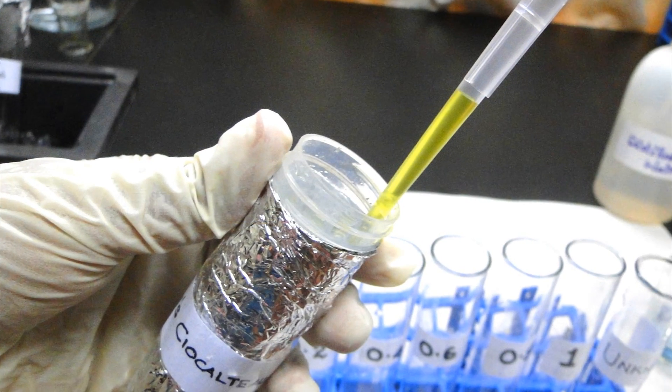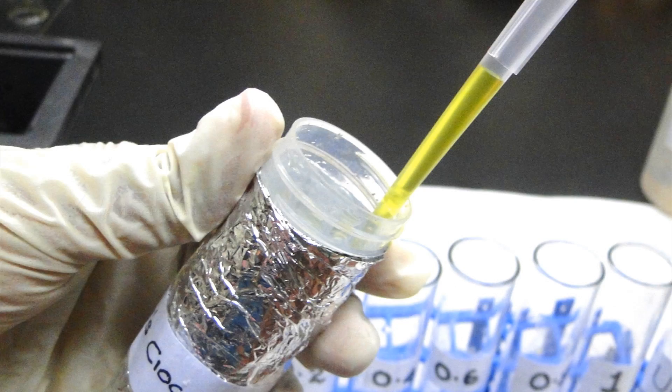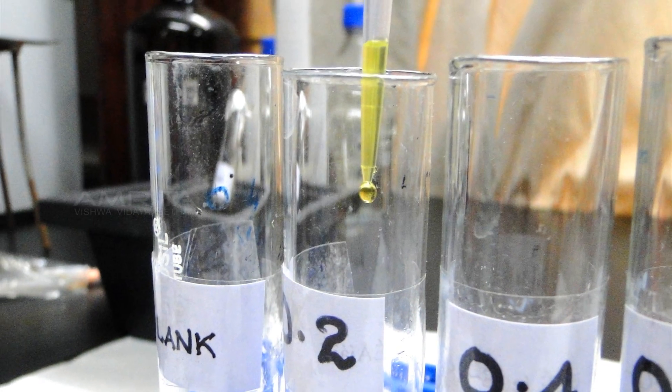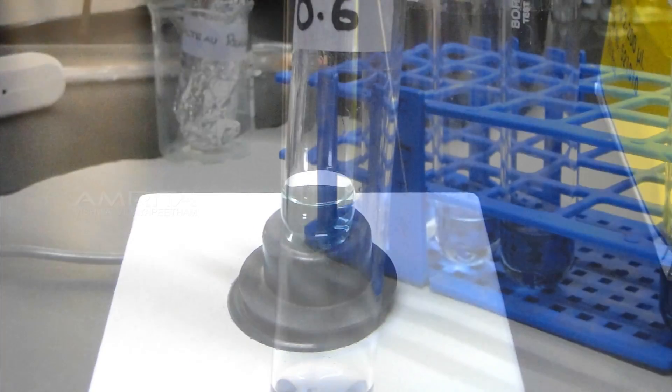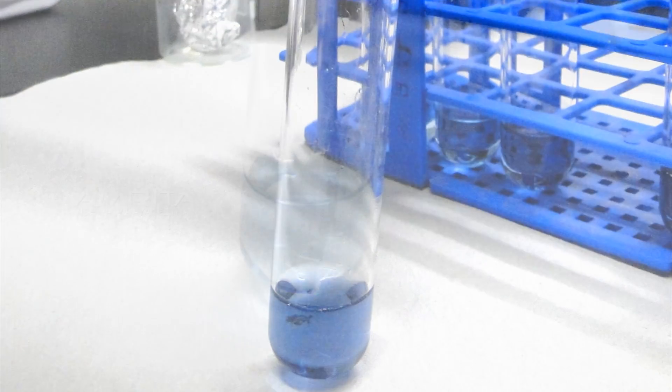After incubation, add 600 microlitre of Folin Ciocalteu reagent to all test tubes using a micropipette. Vortex and incubate for 20 minutes at room temperature. After incubation, the color intensity varies accordingly with the concentration of protein present in the tubes.